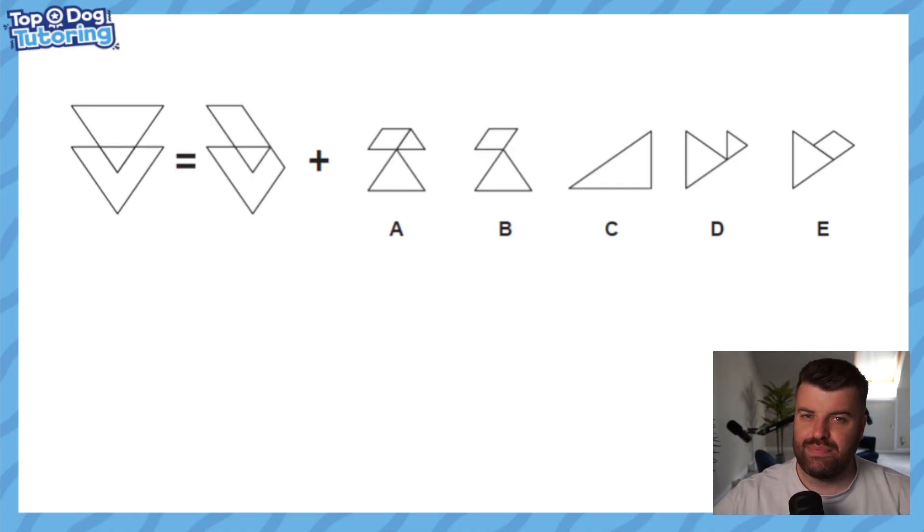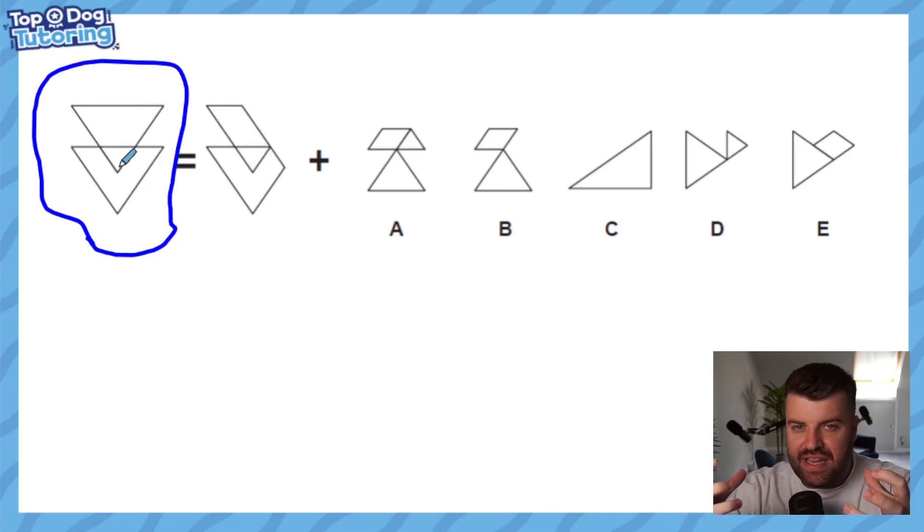Now the reason we call it puzzle pieces is because it acts like a puzzle. On the left hand side, you are given a full shape. This shape is the finished article, the final puzzle once everything's been put together, and luckily for us these puzzles are only two pieces, but it does get tricky.